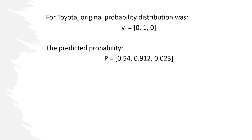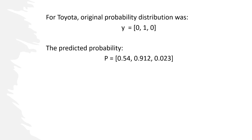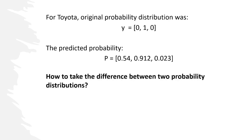Now for Toyota, the original probability distribution was 0, 1, 0. Toyota was in the middle class, so first and third one was 0. And now the predicted probability was 0.54, 0.912, and 0.023. Now how to take the difference between two probability distributions?